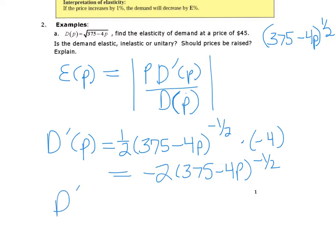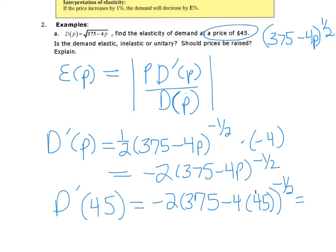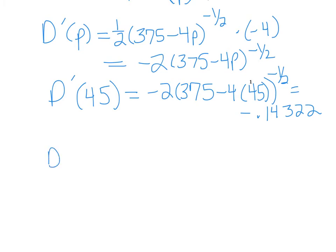And we want to go ahead and put 45 into that because we're looking at a price of $45. And if you compute this correctly in your calculator, you should come up with about negative 0.14322. We also need what d of 45 is. So that's plugging in to the original function, 375 minus 4 times 45. And that value is 13.96.